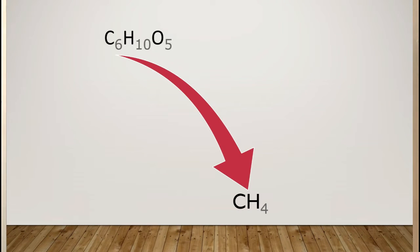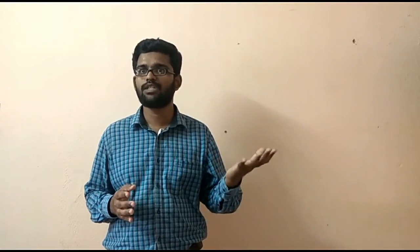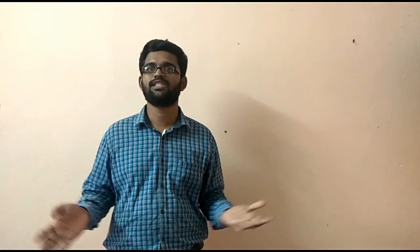If you notice the flow of this reaction it starts from C6H10O5 which contains 6 carbon atoms which ended up with CH4 that is methane which contains only one carbon atom. There is a huge reduction of carbons from the initial stage to the final stage.